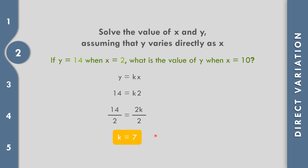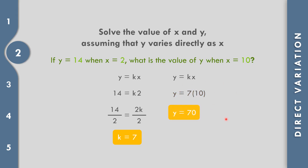Let us continue to solve. What is the value of y when x equals 10? So y equals 7 times 10, which equals 70. The value of y is equal to 70.